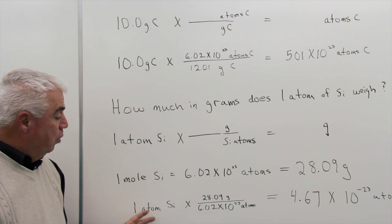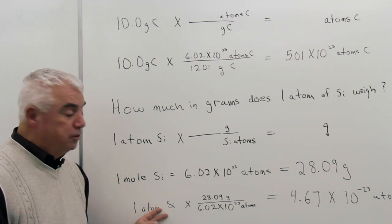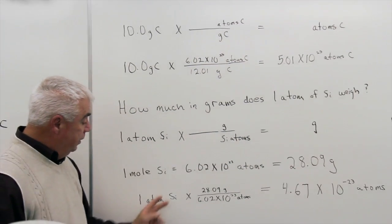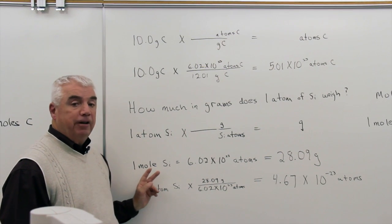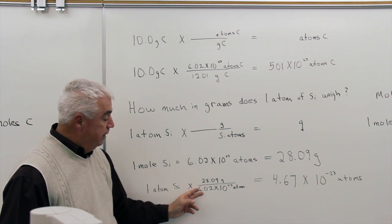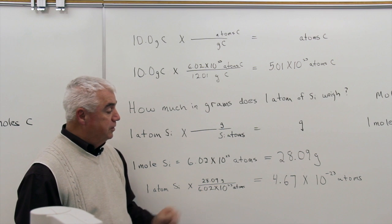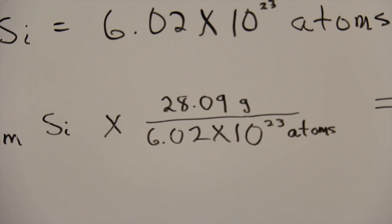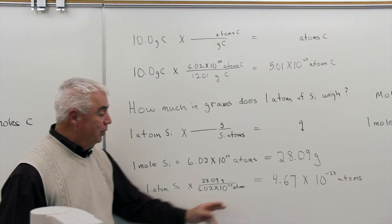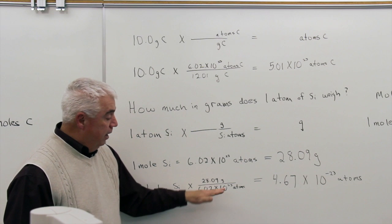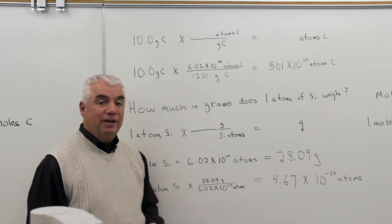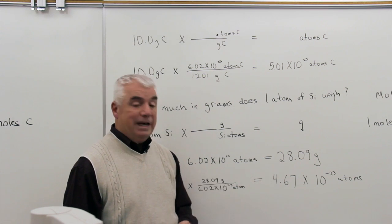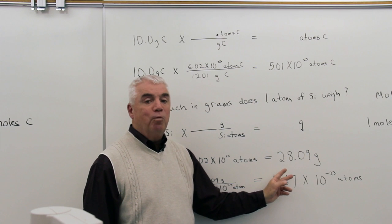And one mole of an element is always the atomic weight in grams — in this case, 28.09 grams, which you'd find on the periodic chart underneath silicon. Now we've got the problem all set up. The units — atoms — are going to cancel; we'll get grams as the answer. 4.67 is three significant figures. We started with exactly one atom, so it's viewed as infinitely significant. Here we have four significant figures and three significant figures, so three is the smallest. Then one more step: we divided 28.09 by 6.02 to get 4.67, then brought 10 to the 23rd up into the numerator — when you cross that line, the exponent changes sign, so it becomes 10 to the minus 23. This is the weight of one silicon atom.